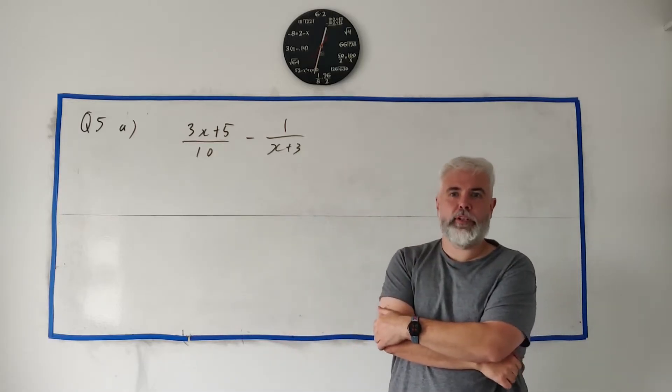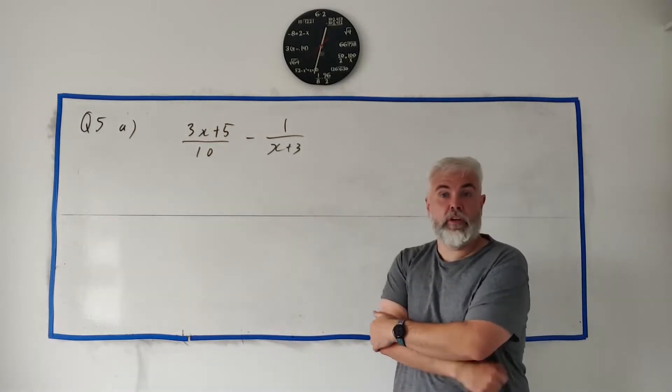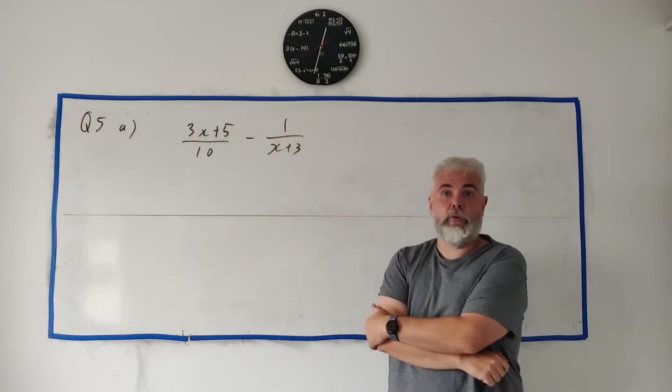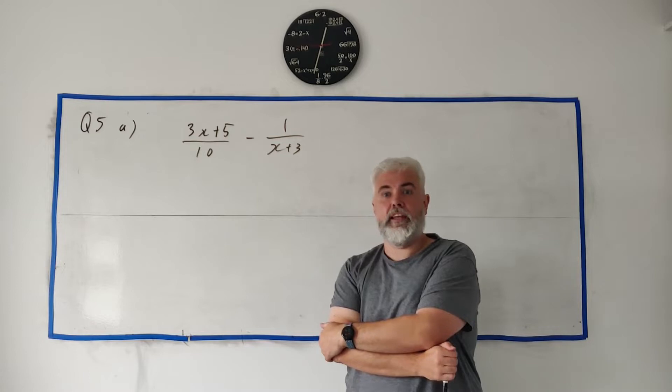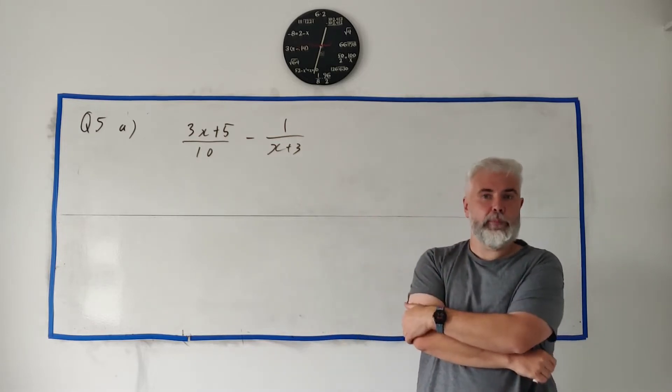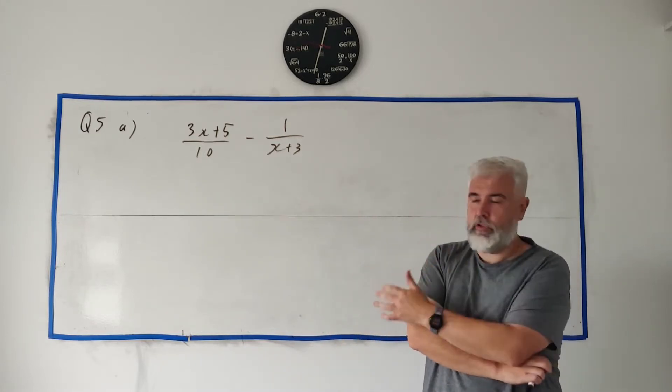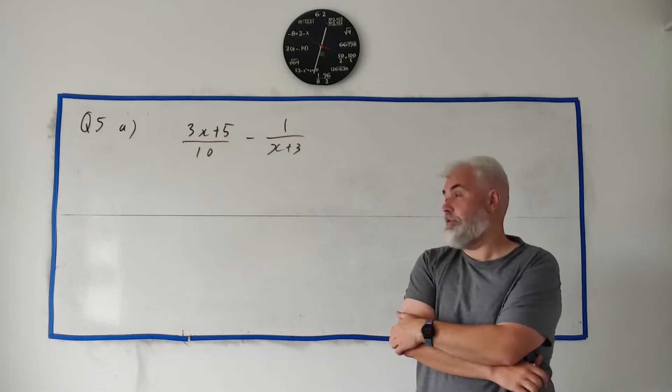It might look a bit complicated, but they're just saying put x equals 2 and tell me what this is equal to, and they even give you a clue: the answer will be in a fraction A divided by B where A and B are natural numbers.